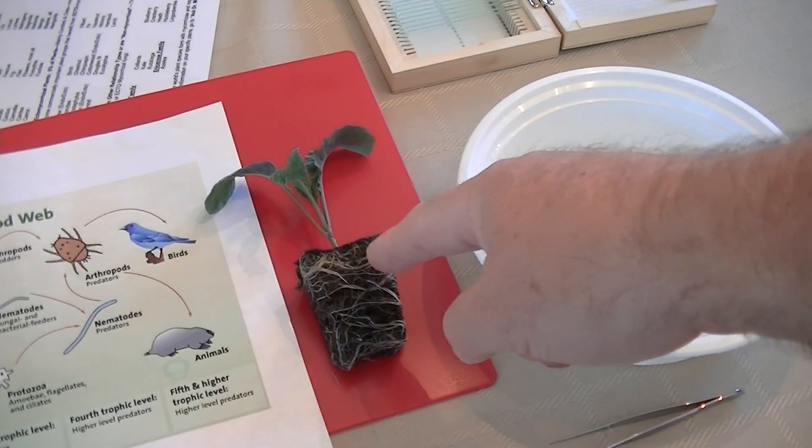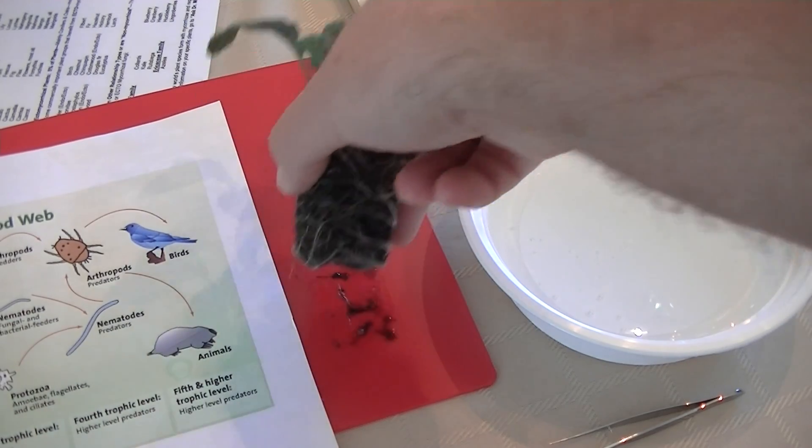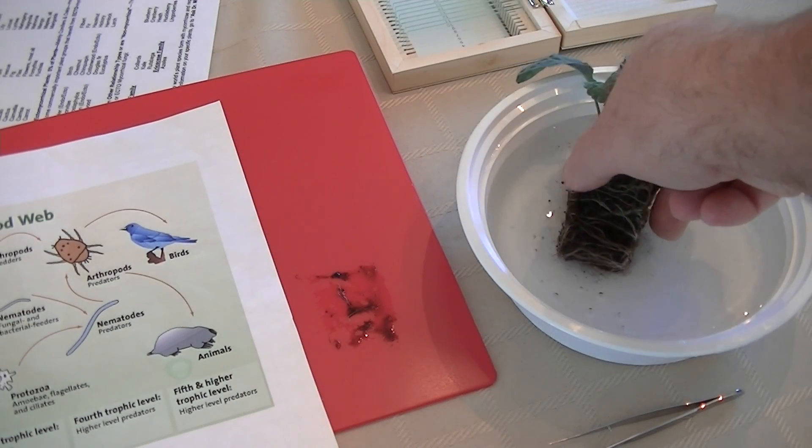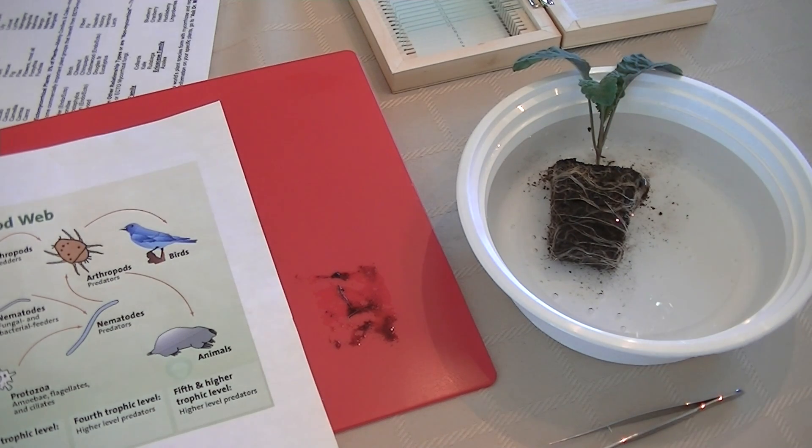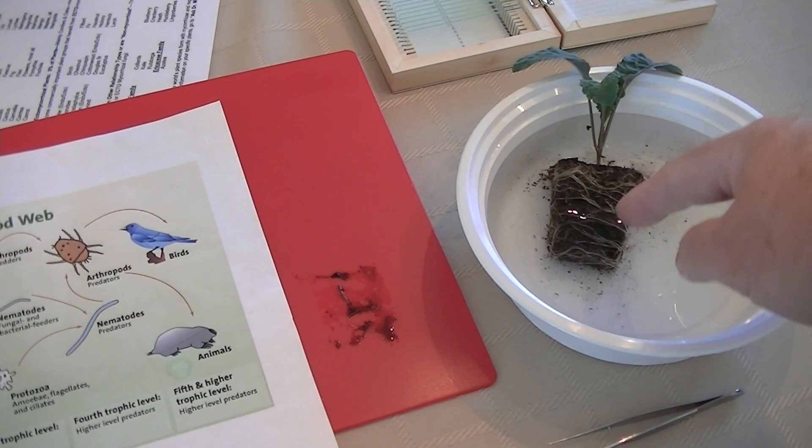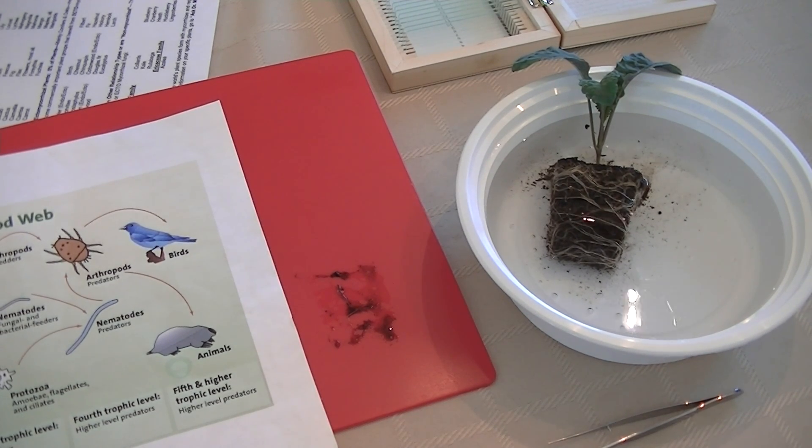Now, so we want to find out what's going on the roots. So I'm going to take this and just place it in the water here and let it soak so we can easily remove the roots from the worm castings and the leaf mold. And then we're going to look underneath the microscope to find out what's going on.